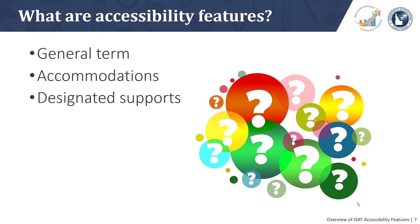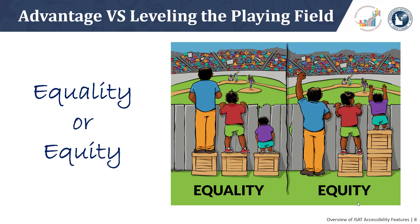I'll explain a little bit about designated supports in a few minutes. Now back to answering the question: who cares? Think of assessment accessibility features in terms of leveling the playing field — it's a matter of equality or equity. I love this image because it shows people of differing heights trying to see over a fence to watch a baseball game. If they all have the same box, the short people can't see. Giving people a different configuration of boxes so they can all see over the fence does not give some an advantage over others — it levels the playing field so everybody can see.